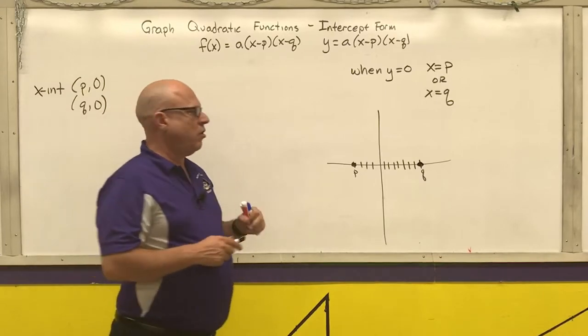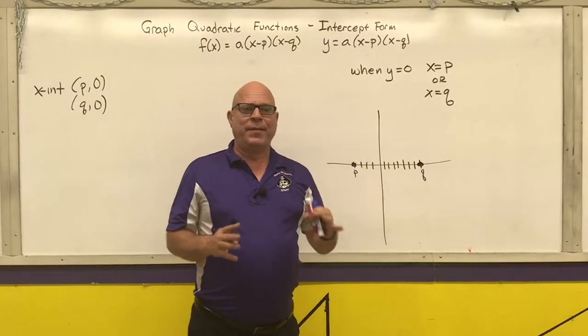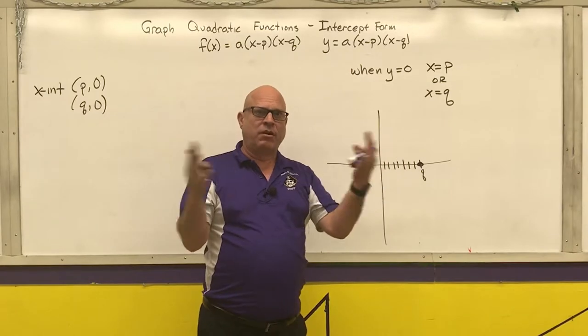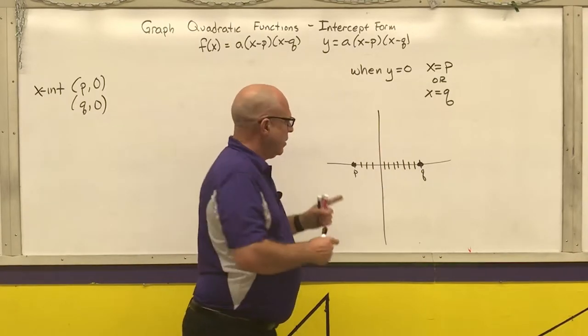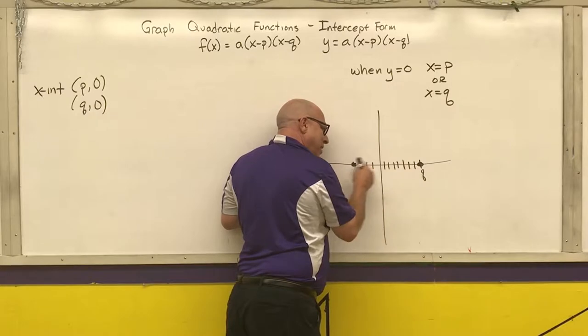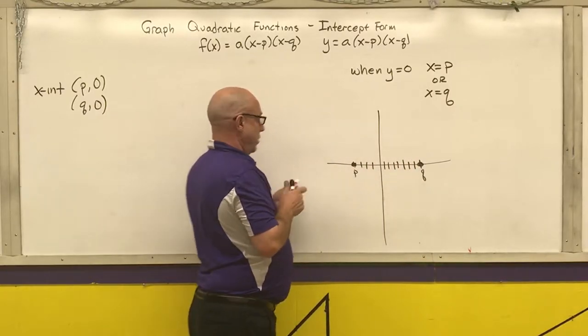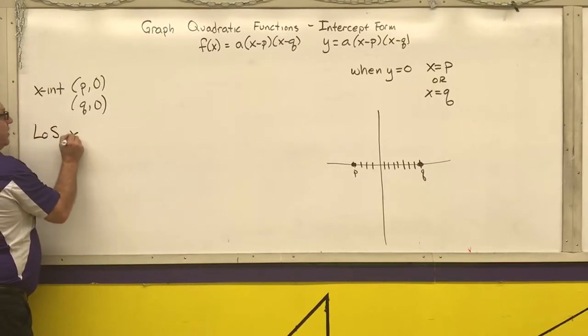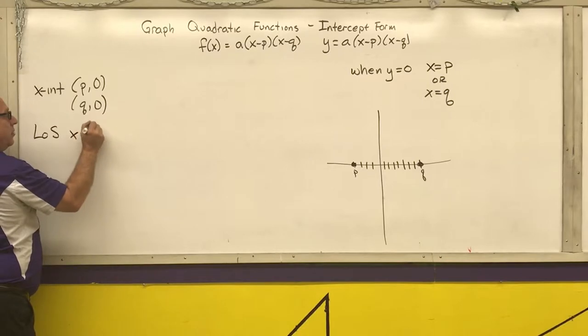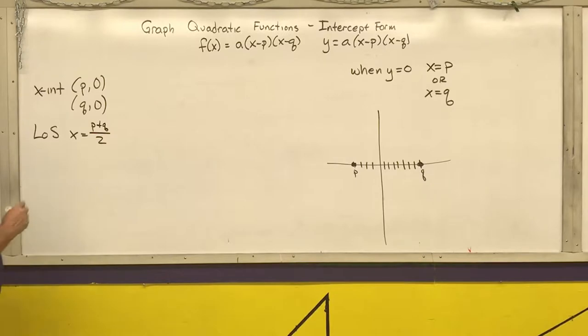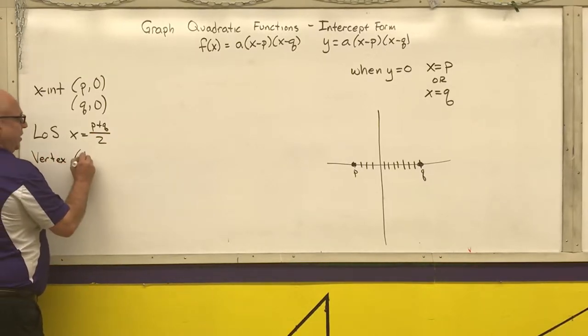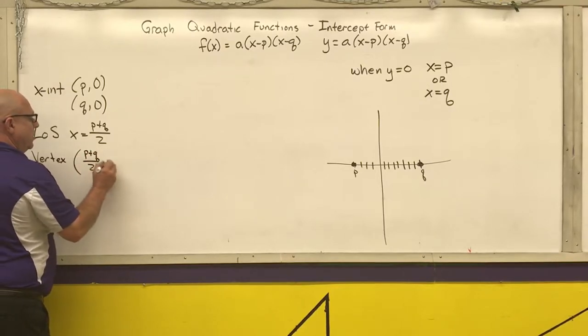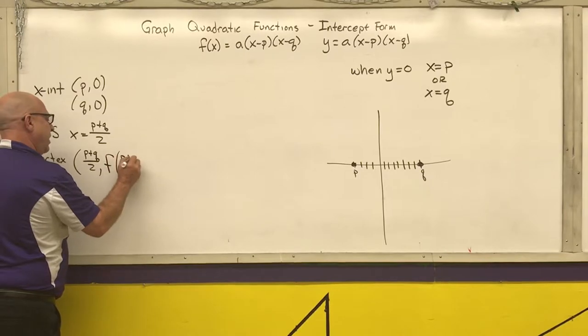And from graphing in standard form, you know that your parabolas are a mirror image across the line of symmetry. Your line of symmetry has to be halfway between these two numbers. So that's our next key point here. Our line of symmetry is x equals p plus q divided by 2. My vertex is at p plus q over 2, and then take that number and stick it into my function.